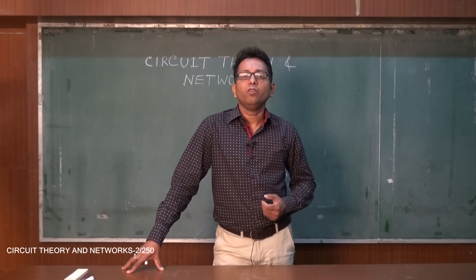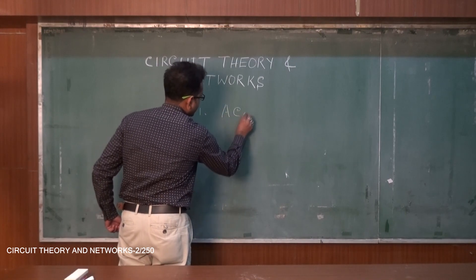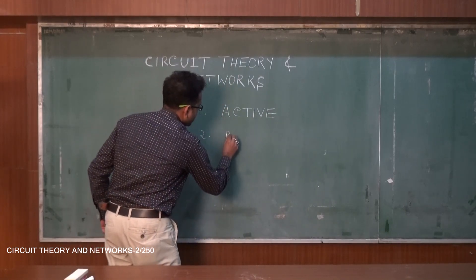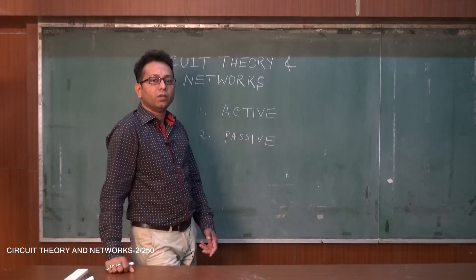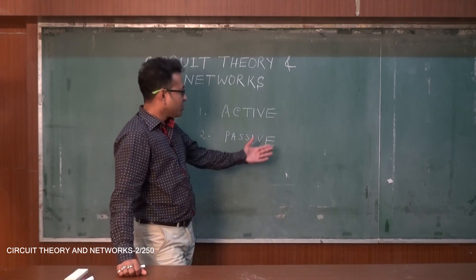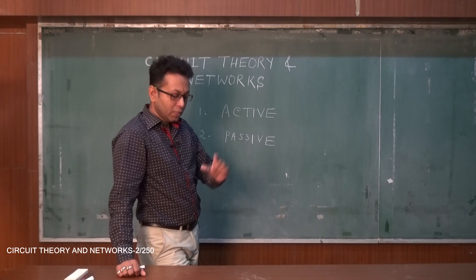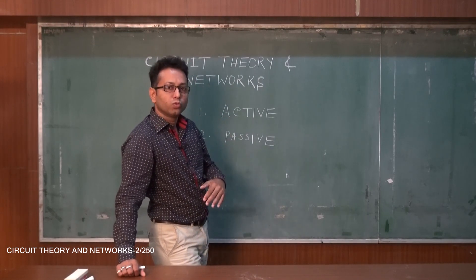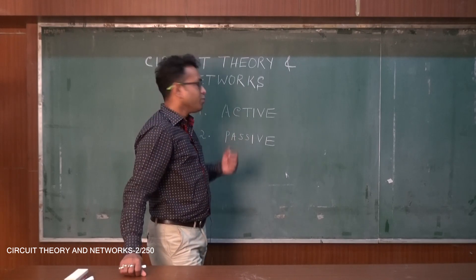Circuit components can be classified into mainly two groups: one is active components, and another one is passive components. Active components are those components which have the capability of generating voltage or power. On the contrary, passive components are those components which cannot generate any voltage or power. For example, a voltage source — that is, batteries — has the capability to generate voltage. Similarly, a current source can generate current, so voltage source and current source are considered active components.